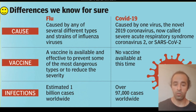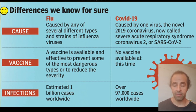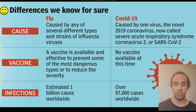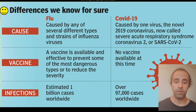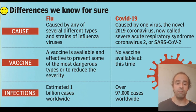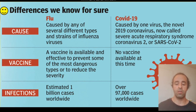Regarding vaccines, H1N1 has a vaccine, although it is not very effective as the virus keeps changing its genetic material. Still, it can protect up to 30 percent. Meanwhile, there is still no confirmed vaccine for the coronavirus. Lastly, the infection rate of H1N1 is much higher, having reached 1 billion cases worldwide, while for the coronavirus...